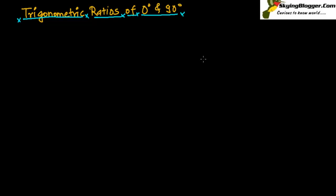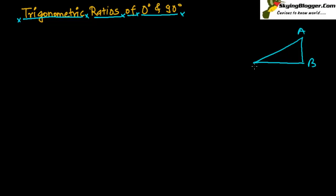Hello friends. Once again in this video we are going to learn trigonometric ratios of 0 degree and 90 degree. So before going, let me make a right angle triangle. Suppose this is a right angle triangle — it's A, B, and C — and it is making some angle that's theta.